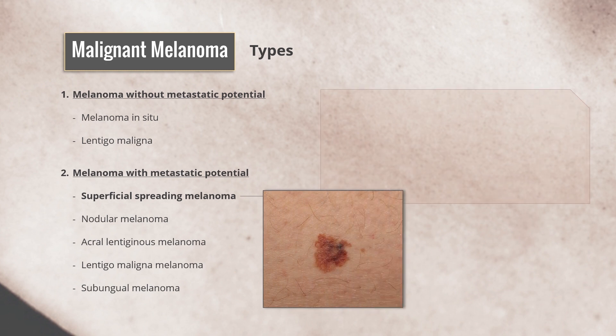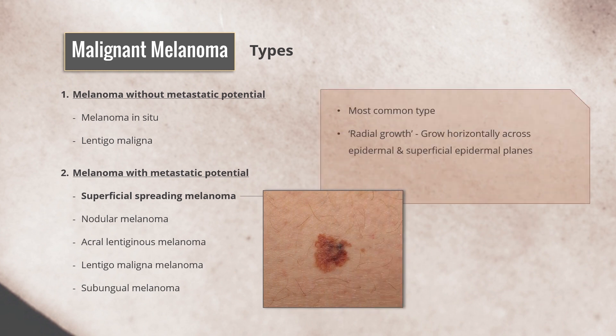Superficial spreading melanoma is the most common type. It has radial growth — that is, it tends to grow horizontally across the epidermal and superficial dermal planes. Since it does not reach lymphatics and blood vessels, the prognosis tends to be good.